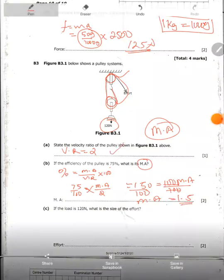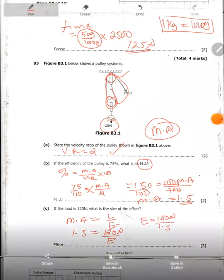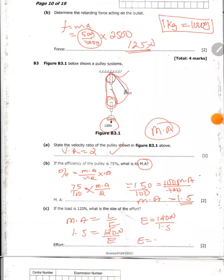They are saying, if the load is 120 newtons, what is the size of effort? Now we know that mechanical advantage is equal to load over effort. Mechanical advantage is 1.5. The load is 120 newtons. So in this case, effort is equal to 120 newtons divided by 1.5. So 120 divided by 1.5, you get 80. So the effort is equal to 80.0 newtons.